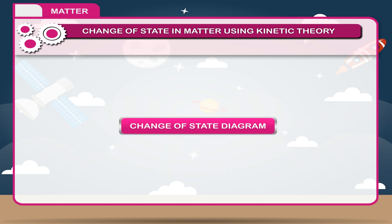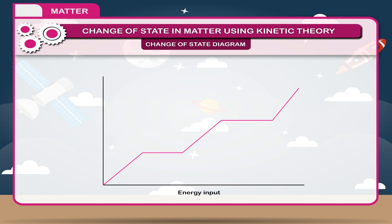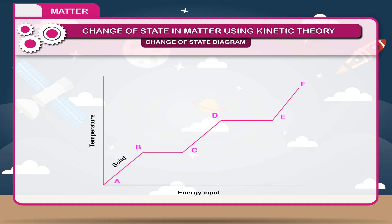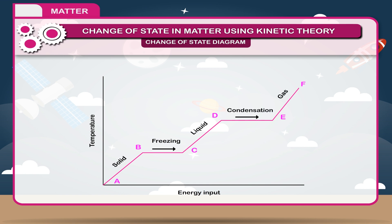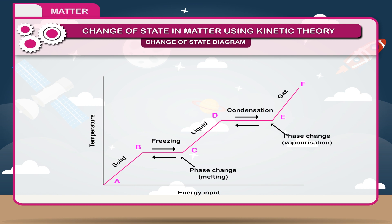Change of state diagram. The diagram shows energy input and temperature on its axes, with labels for the states — solid, liquid, and gas — and the transitions between them: freezing, condensation, melting, and vaporization, each representing a phase change.